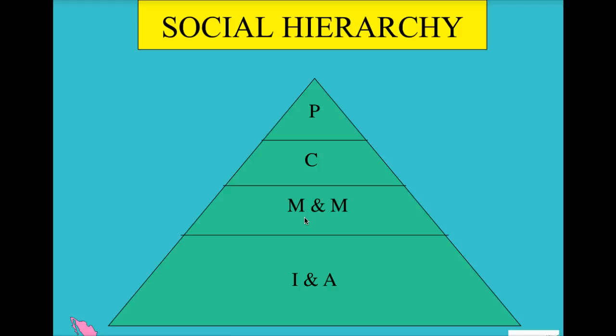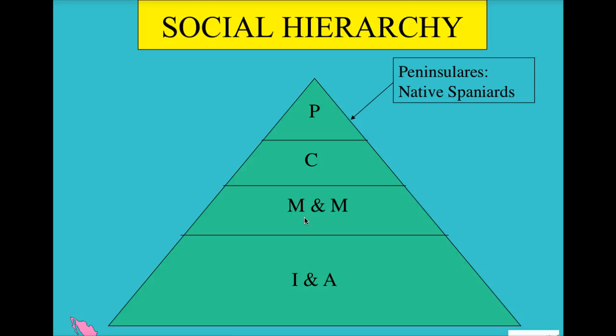Just to review our social hierarchy: at the very top you have the Peninsulares, who are native Spaniards — born on the Iberian Peninsula, which is where Spain and Portugal are. Spain really likes the idea of having native Spaniards ruling the colonies, sending them over as viceroys or governors to ensure the mercantile system is working. They get the highest positions in government and society.